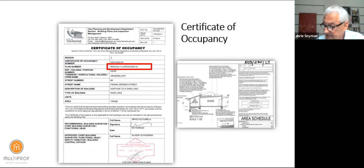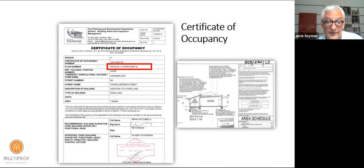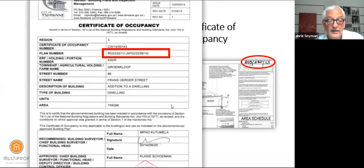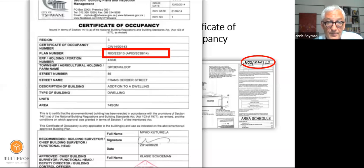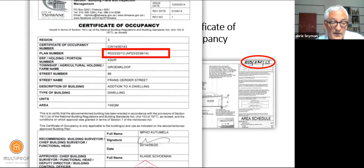It might seem like compliance just has a big nuisance value, but there are very good reasons for all of these requirements. The certificate of occupancy will have the same plan number as the building plan, indicating which building plan was used for the inspection. Only when you have a building plan, occupation certificate, and no other unapproved structures on the property, do you have a legal situation.